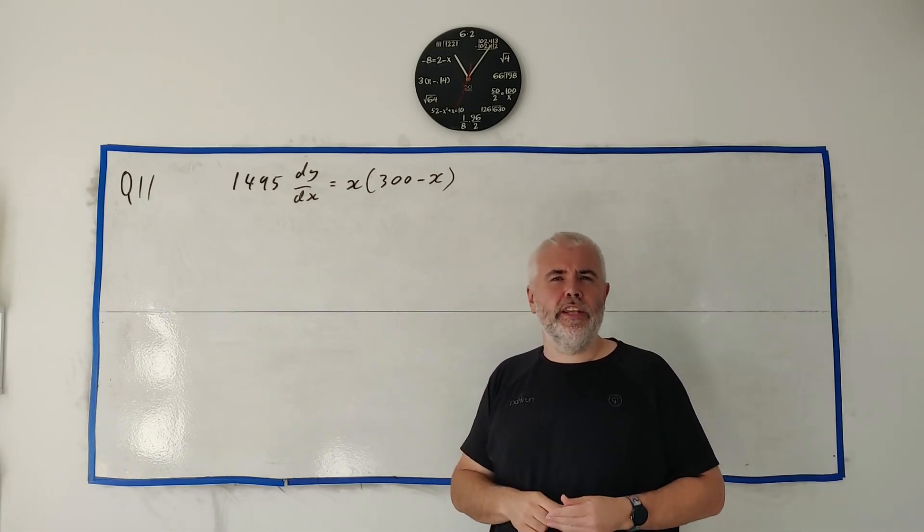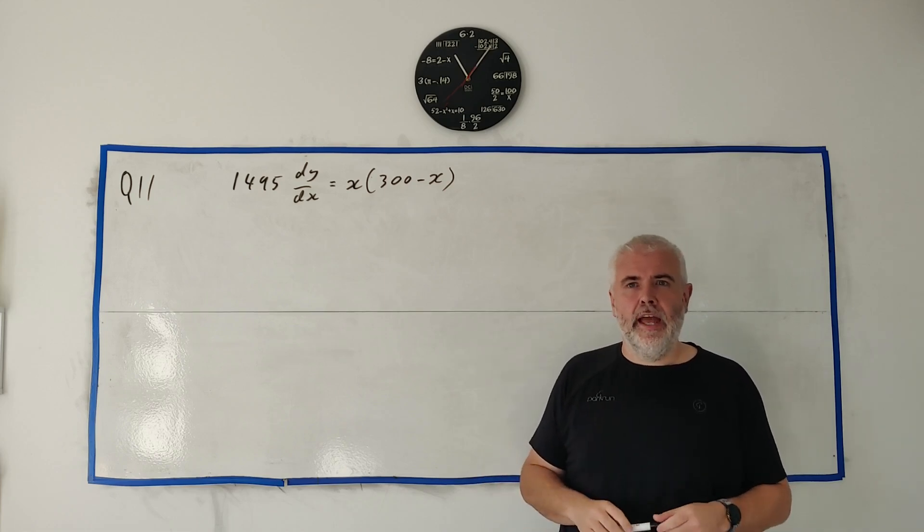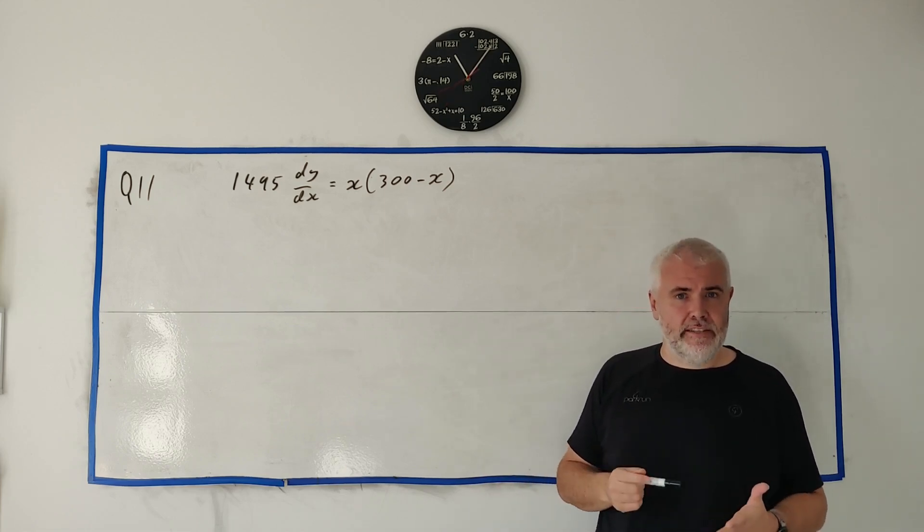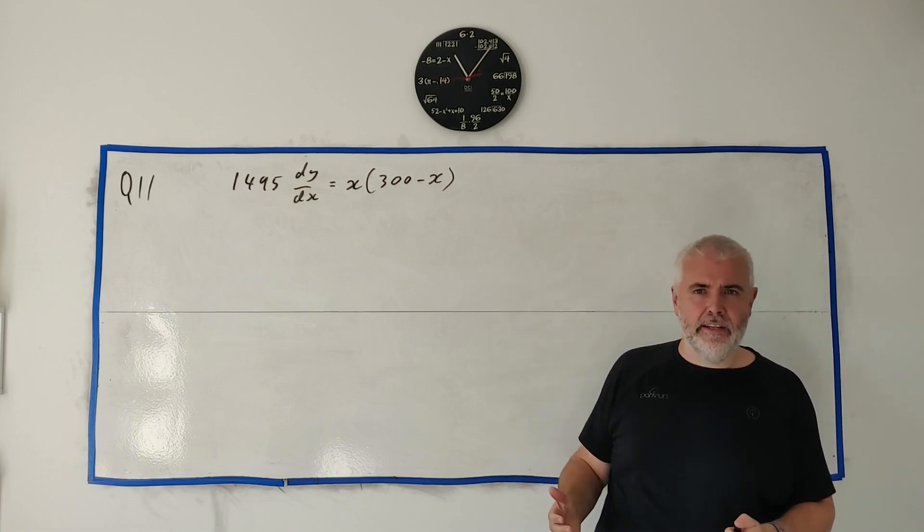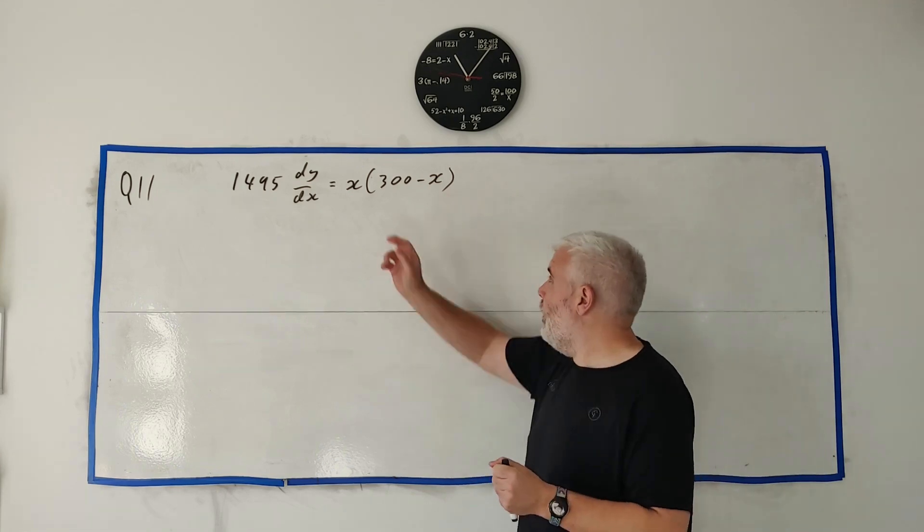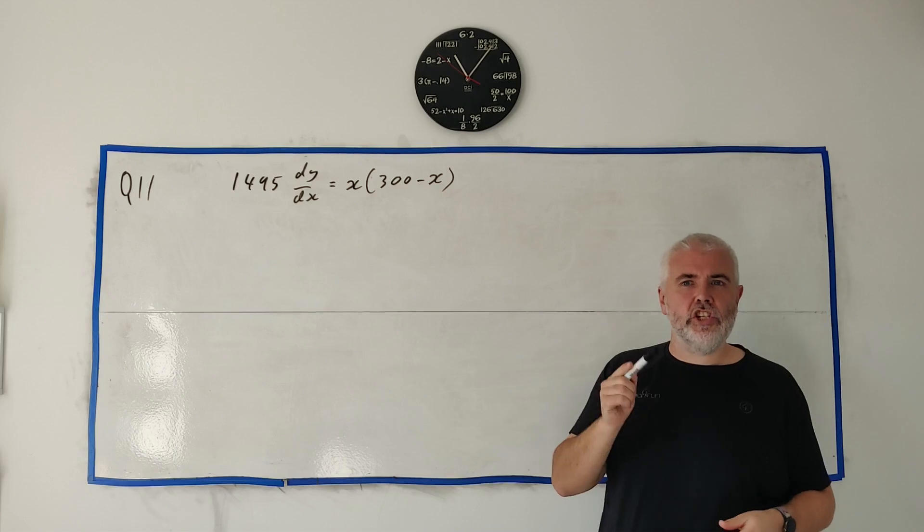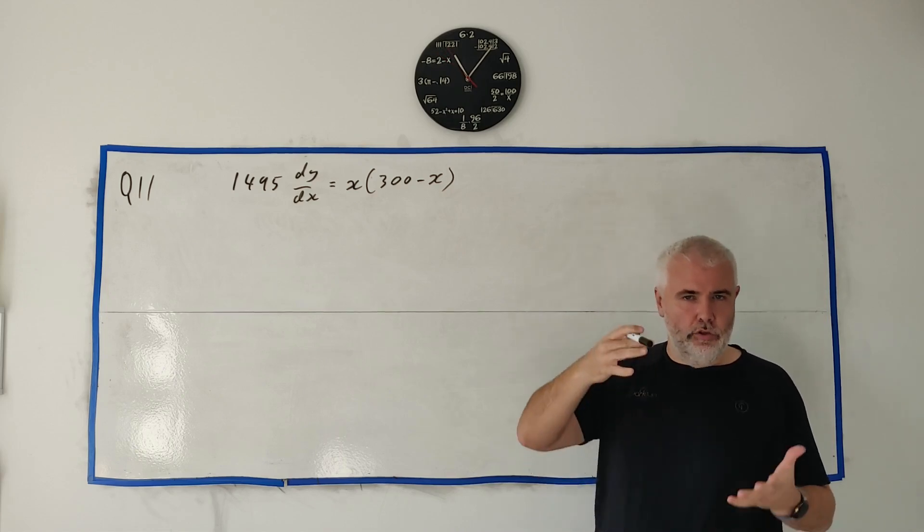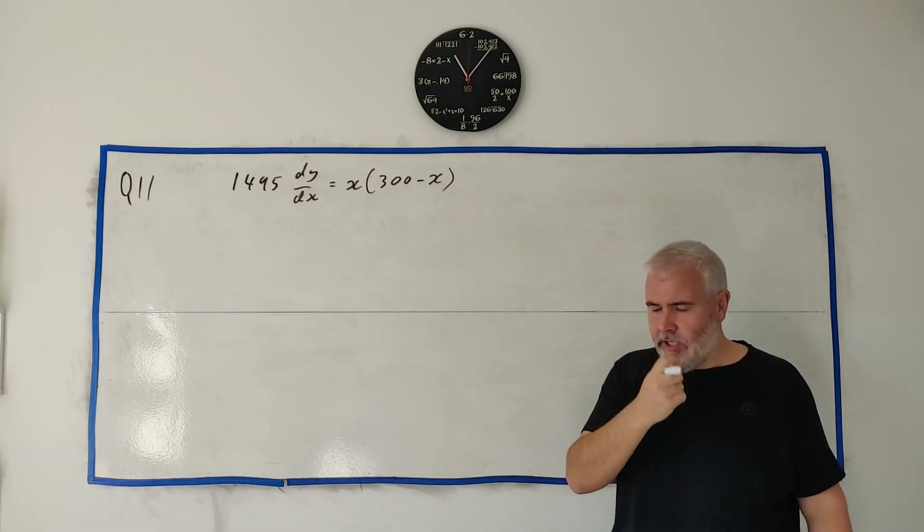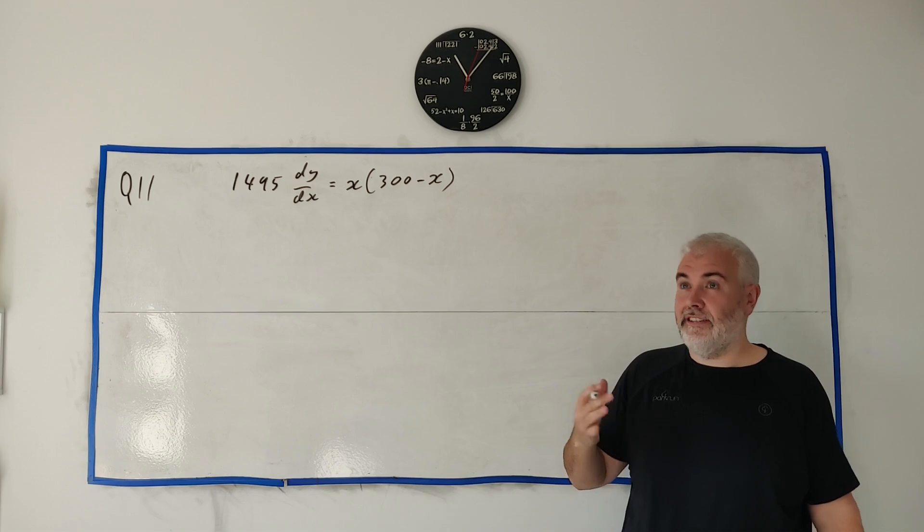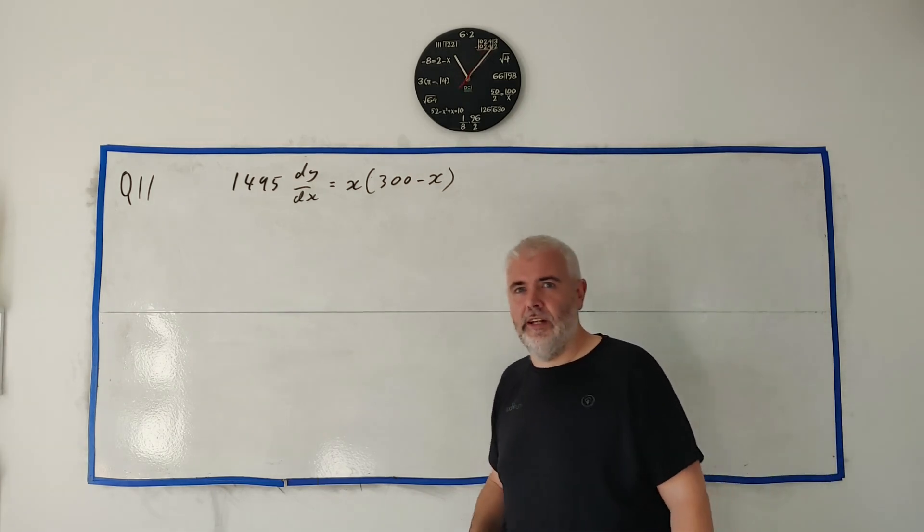Okay, part A though. The story they tell us, there's a field with 300 plants in it. And every one of these plants can be infected by disease. After a time T, the first plant is infected. And we'll call that X. So, X is the number of plants infected. And the rate of change of X is proportional to what I'm about to say here.